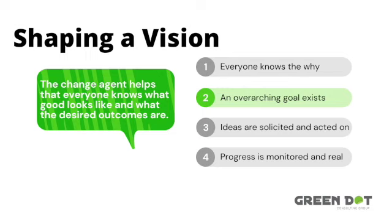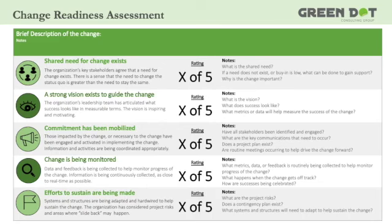Moving on to the next section, you're evaluating whether or not a strong vision exists to guide the change. The vision is often articulated by the project champion or a key stakeholder at a high level within the organization. The vision should explain why the change is necessary and be inspiring and motivating to those participating in the change. A rating of one suggests that no vision exists. A rating of five suggests that leadership is heavily involved and has articulated a vision that is motivating and inspiring. Based on your assessment, you'll want to take notes on what to do in order to close the gaps surrounding the vision.